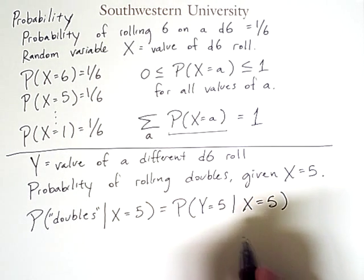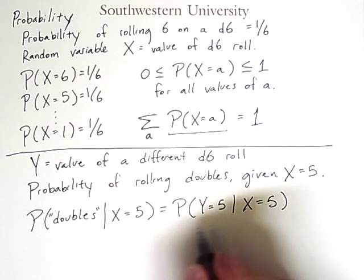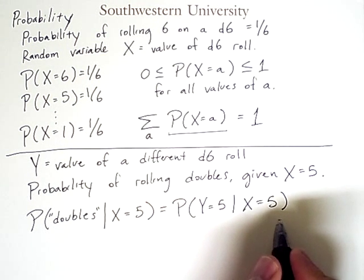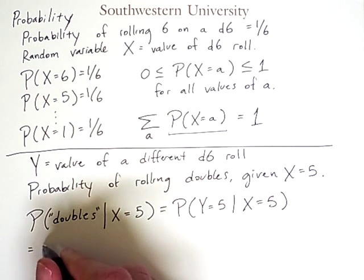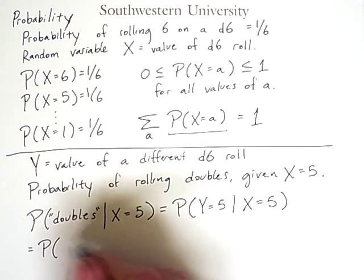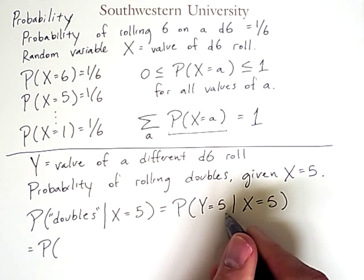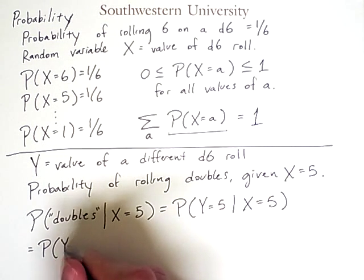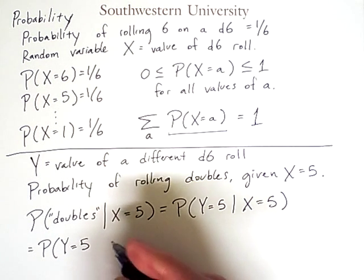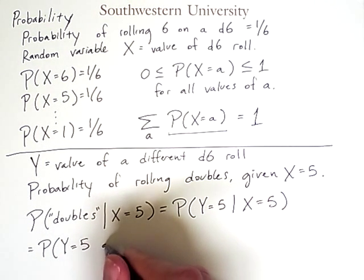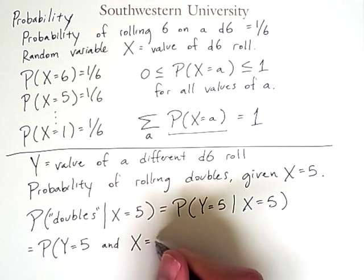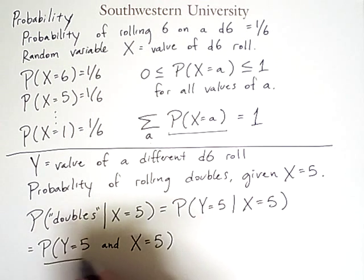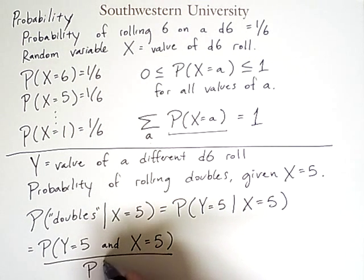Now, in general, when you see an expression like this, this is always equal to the following. It is equal to the probability of the thing on the left of this bar and the thing on the right of the bar all divided by the probability of the thing on the right of the bar.